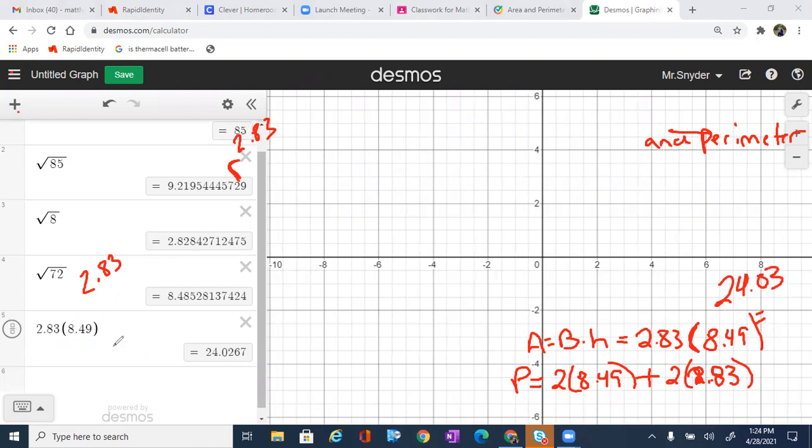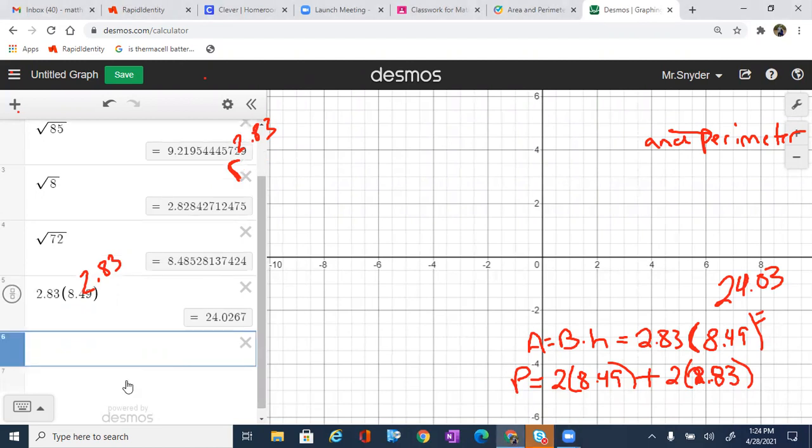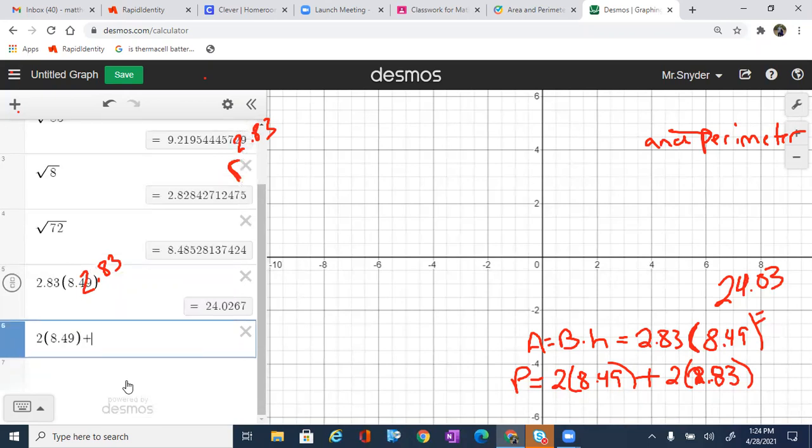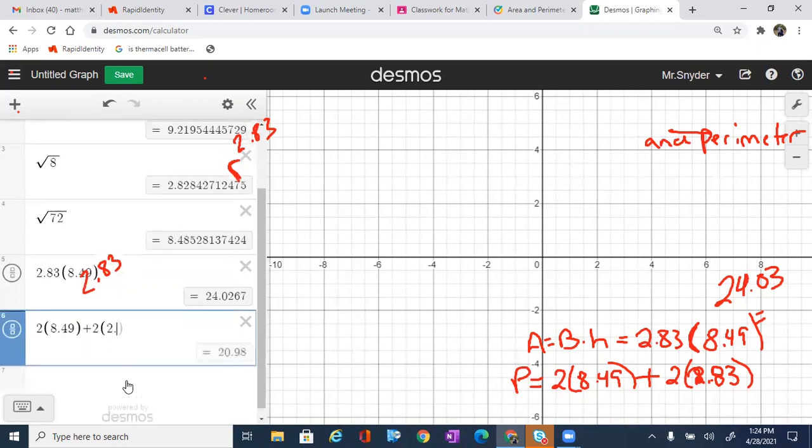And then the perimeter, we're just going to type in the same line, which is the sum all the way around. So 2 times 8.49 plus 2 times 2.83. And that will bring us to 22.64. So 22.64 is going to be our perimeter. So the distance around is 22.64, and the total area is 24.03.